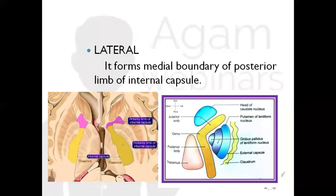Moving on to the lateral relation: the lateral surface of the thalamus forms the medial boundary of the posterior limb of the internal capsule. The internal capsule has three parts: the anterior limb, the genu, and the posterior limb. This lateral surface of the thalamus forms the medial boundary of the posterior limb of the internal capsule.